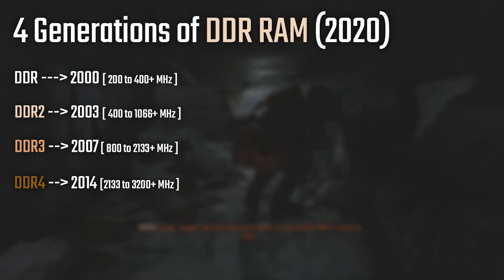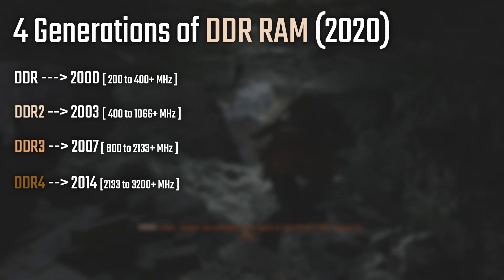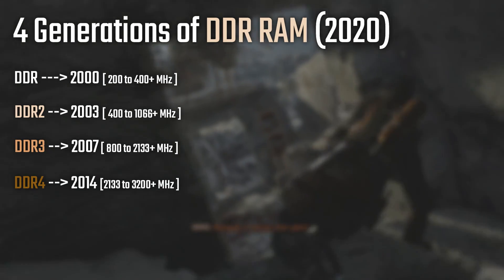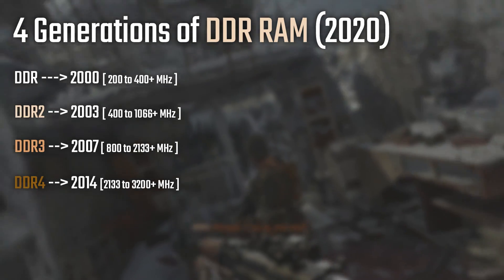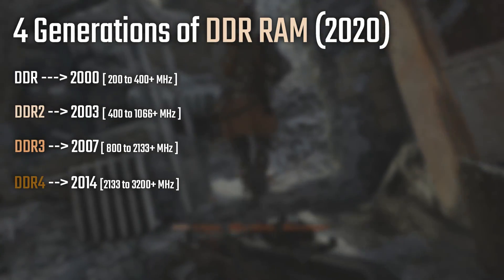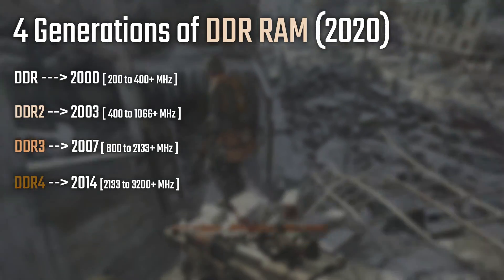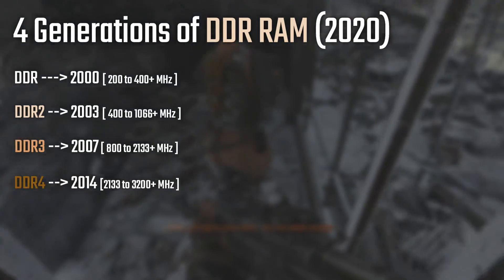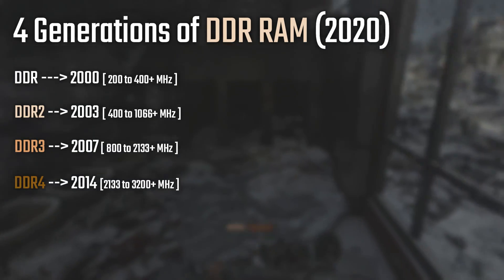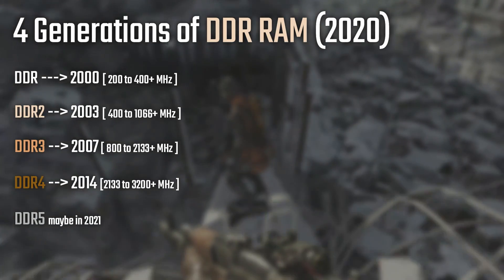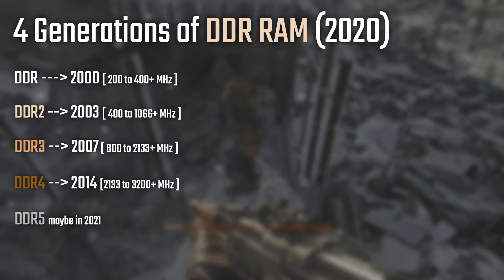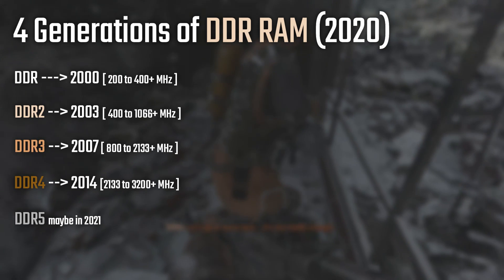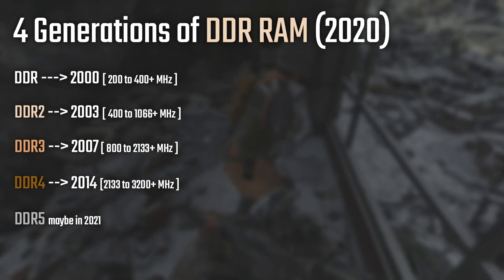DDR4 is the latest DDR we currently have available, and it was released in 2014. DDR to DDR2 took 3 years, DDR2 to DDR3 took 4 years, and DDR3 to DDR4 took 7 years — I assume that was also due to CPU market stagnation. As for DDR5, we have already seen some news about samples, and from what can be read across the internet, it is expected to be released to consumers in 2021 or 2022.